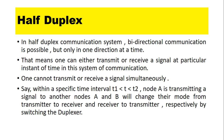In a half duplex communication system, bi-directional communication is possible but only in one direction at a time. That means one can either transmit or receive a signal at a particular instant of time. In this system, one cannot transmit and receive a signal simultaneously. Say within a specific time interval T1 less than T less than T2, node A is transmitting a signal to node B.